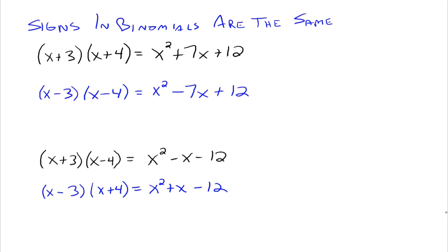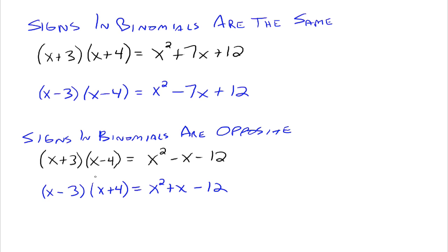Now when the signs in the binomials are opposites — where we have x plus 3 times x minus 4 — if you multiply that all out, you'd have a positive 3x and a negative 4x, which gives a negative x, and then positive 3 times negative 4 gives negative 12. So this multiplies out to x squared minus x minus 12, whereas x plus 4 times x minus 3 gives x squared plus x minus 12. Either the signs are going to be the same in the binomials, or they're going to be opposites.